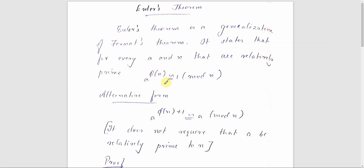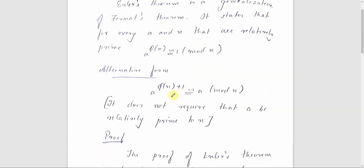I am now writing the Euler's totient function. In a more general context, the alternate form states that a raised to φ(n)+1 is congruent to a mod n. In this second form, the coprimality condition on a and n will be relaxed.